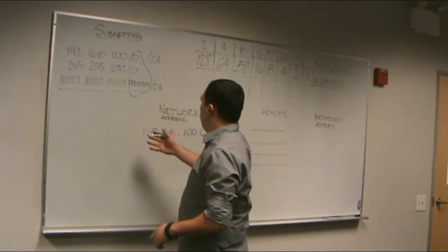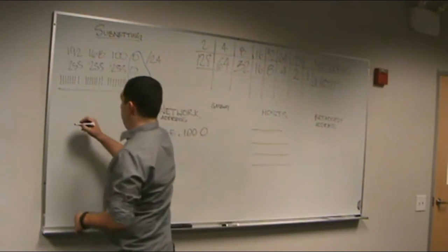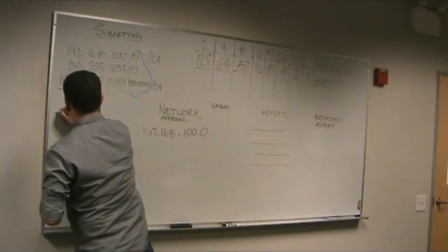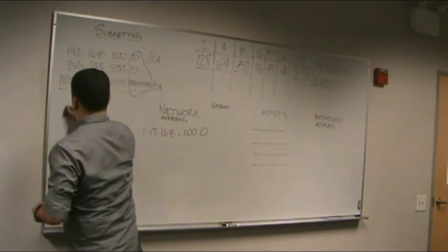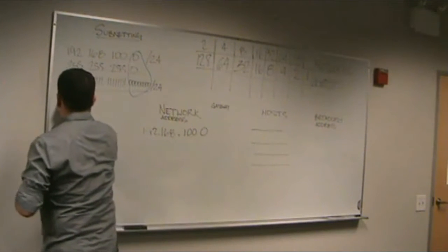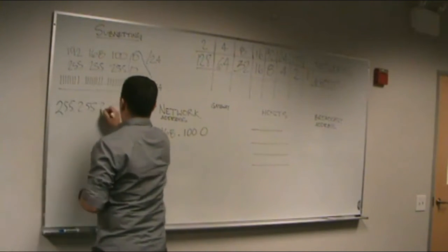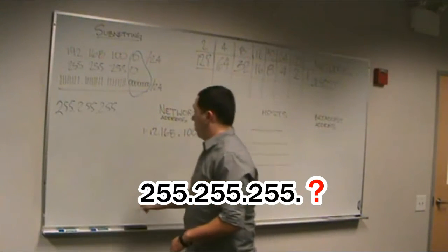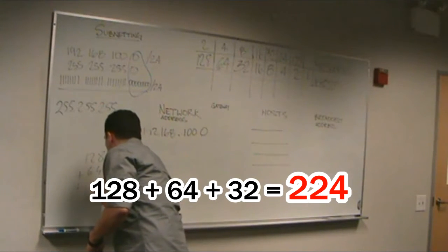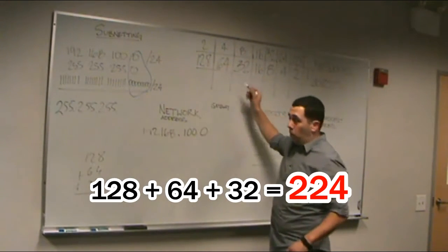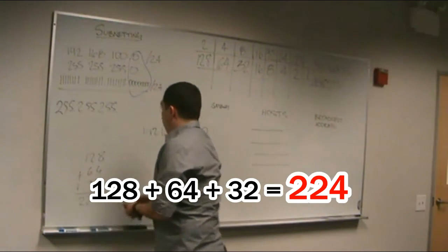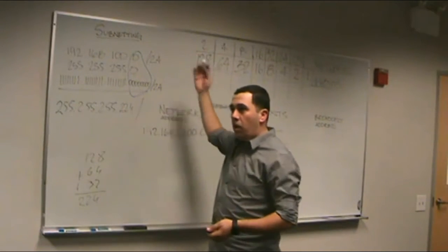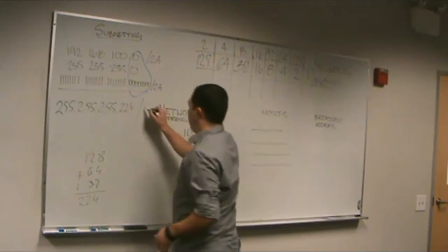Finding this, we can find very simply what our new subnet mask is going to be. It's going to be 255.255.255 — and the last number is 128 plus 64 plus 32, which are the numbers we use for the borrowed bits. The total is going to be 224. So we have the last number, which is 224. Now, what slash is it? We cannot use 24 anymore — 24 is our base network. We borrow three, so 24 plus 3 is going to be slash 27.